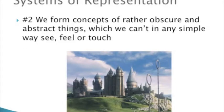The second system of representation is that we form concepts of rather obscure and abstract things which we can't in any simple way see, feel, or touch. This includes our comprehension of such things as death or love. Both are intangible ideas, and yet we have some knowledge about what each means. This system of representation is also open to fictional characters or places.